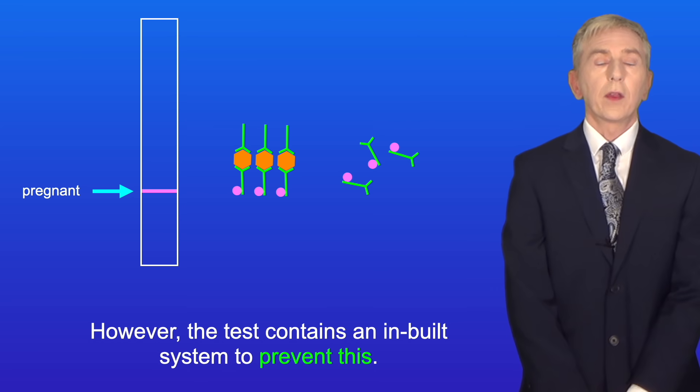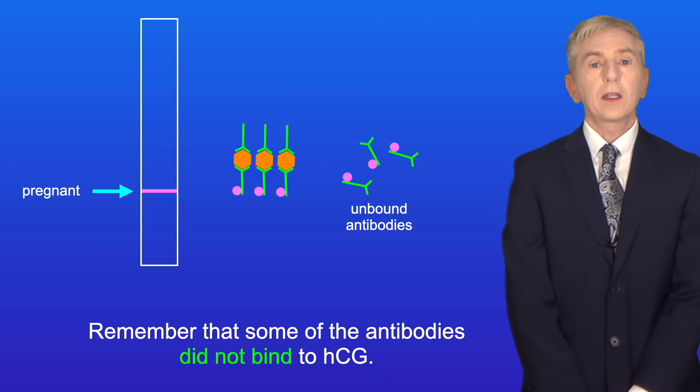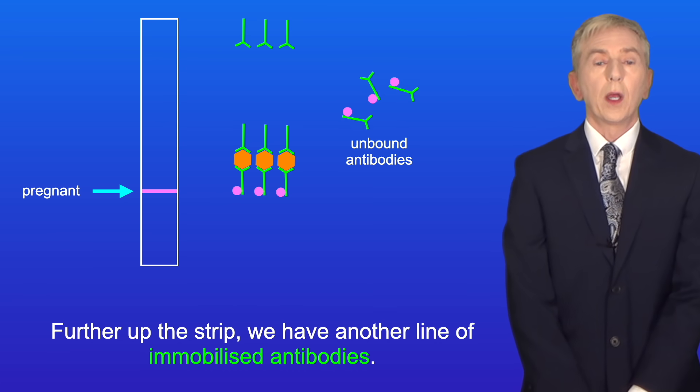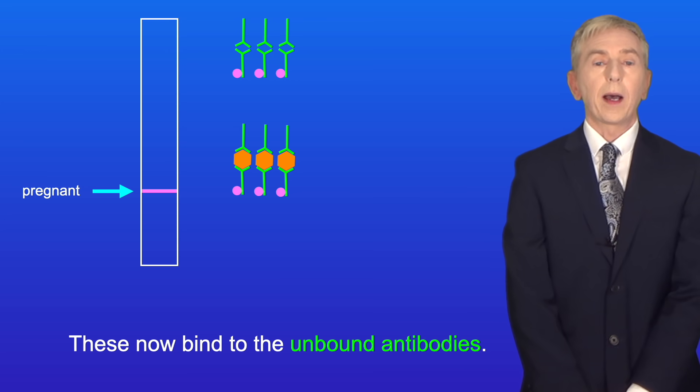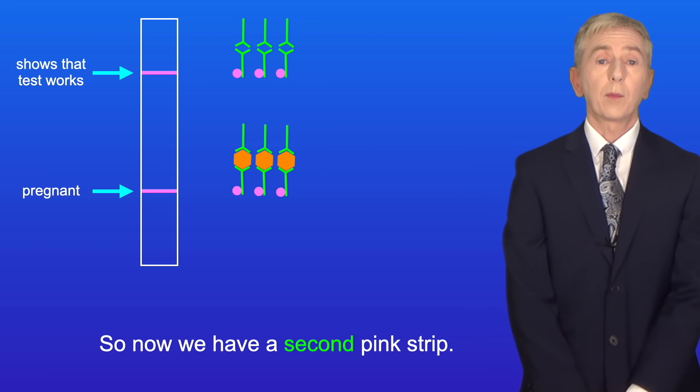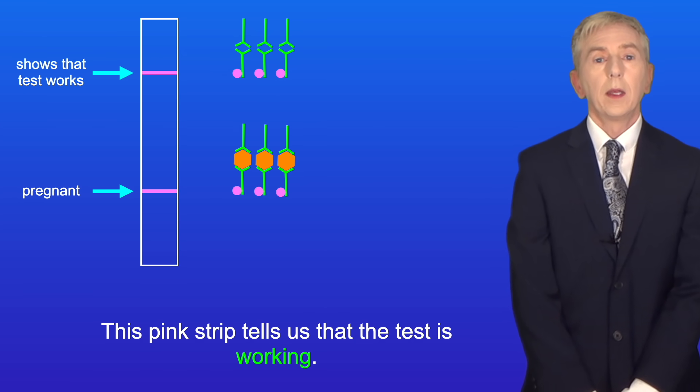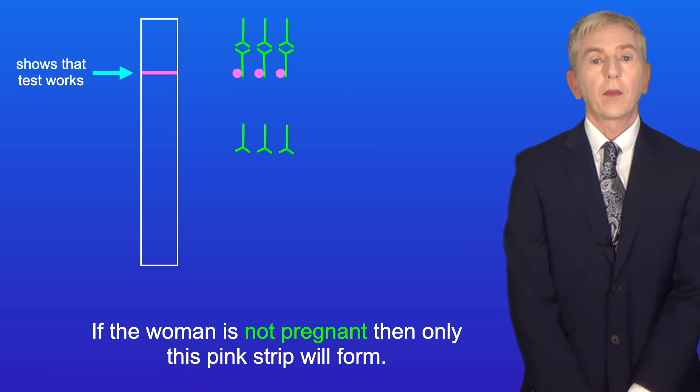However, the test contains an inbuilt system to prevent this. Remember that some of the antibodies did not bind to HCG. These unbound antibodies continue to move up the strip. Further up the strip, we have another line of immobilized antibodies. These now bind to the unbound antibodies. So now we have a second pink strip. This pink strip tells us that the test is working. If the woman is not pregnant, then only this pink strip will form.